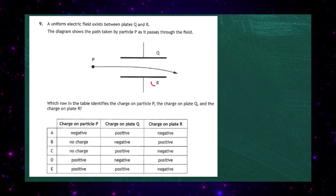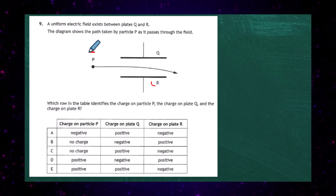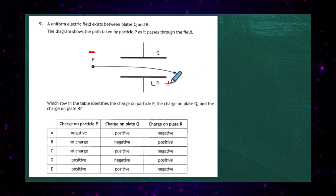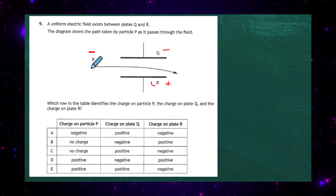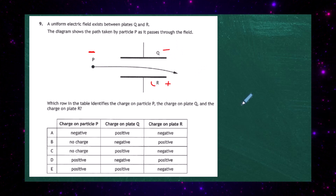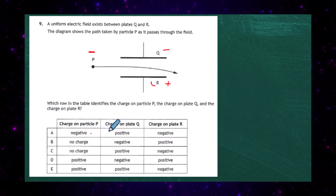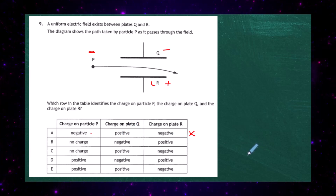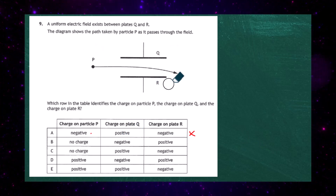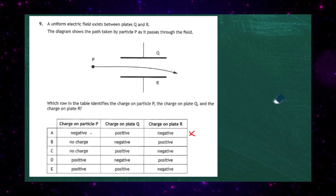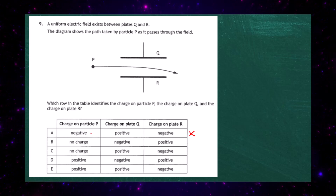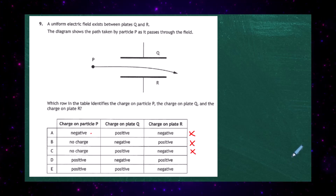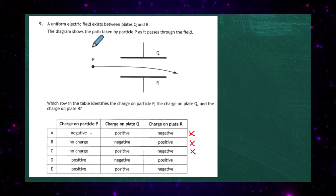We must remember that opposite charges attract and like charges repel. If particle P were negatively charged, it would be attracted towards the positive plate and repelled from the negative plate. Checking the responses for a negative P: the charge on plate Q would need to be negative — but that's false for the given trajectory. We also rule out any 'no charge' responses, because an uncharged particle won't be affected by the electric field.